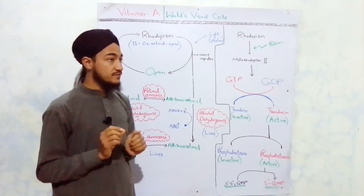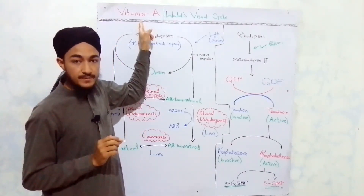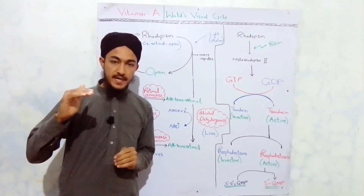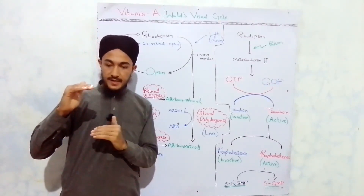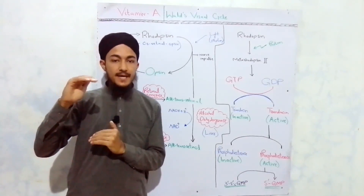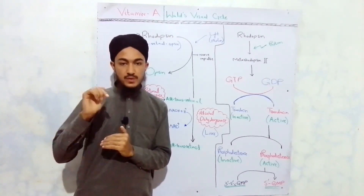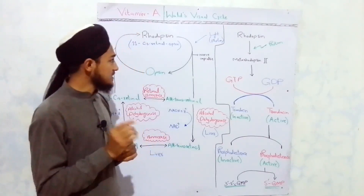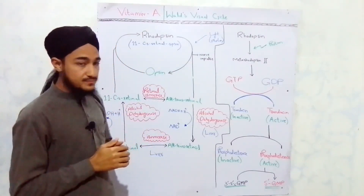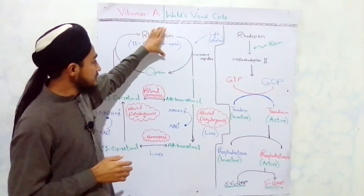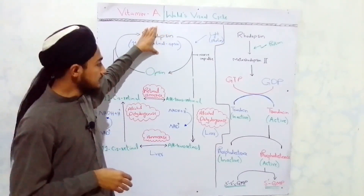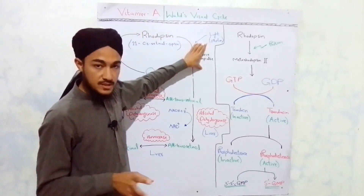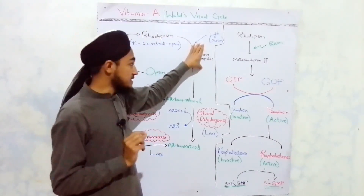Individuals suffering from vitamin A deficiency have a greater dark adaptation time. When dark adaptation time is increased, it indicates vitamin A deficiency in that individual. That was the key terminology related to the visual cycle. Now we turn to the nerve impulse — how it is initiated by the rhodopsin molecule and how it contributes to the visual cycle.